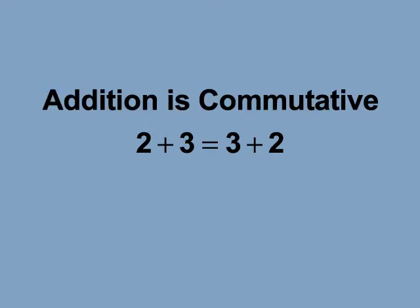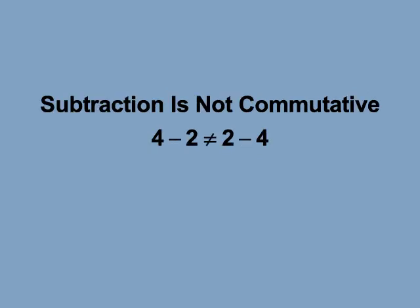Because addition is commutative, adding from left to right, or right to left, gives you the same result. The expressions 2 plus 3 and 3 plus 2 give the same result. But this isn't the case with all operations. Subtraction isn't commutative — 4 minus 2 is not the same as 2 minus 4.